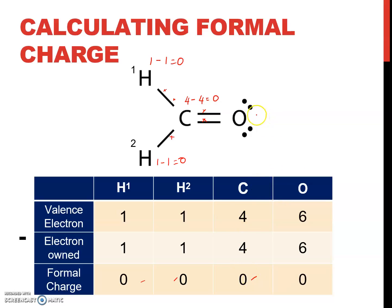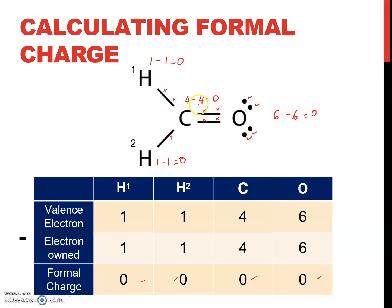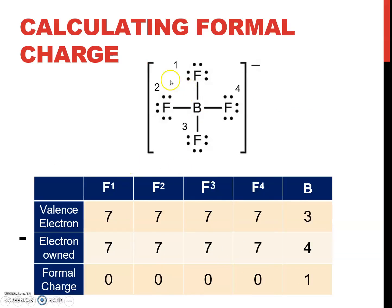Next for oxygen. Oxygen has 6 valence electrons, minus the electrons owned by this atom — counting 1, 2, 3, 4, 5, 6 — so 6 minus 6 is 0. The formal charge for all atoms in this compound is 0.